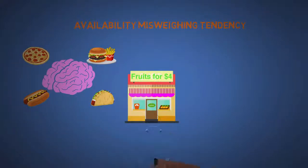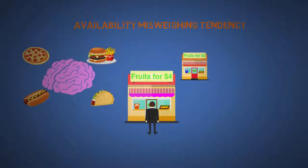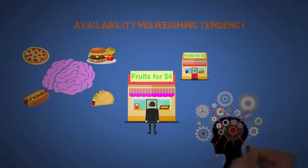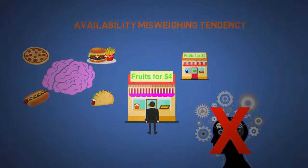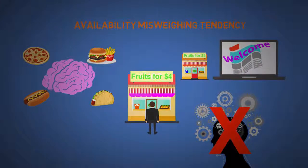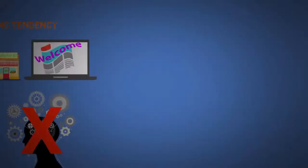The eighteenth is availability misweighing tendency. The mind works with what is easily available to it. Like fast food. We might buy things that's available right in front of us even if there's something much cheaper somewhere else. This is why we have instincts, so the mind doesn't have to work as hard figuring stuff out. So if you got a confusing website or advertisement, then good luck.